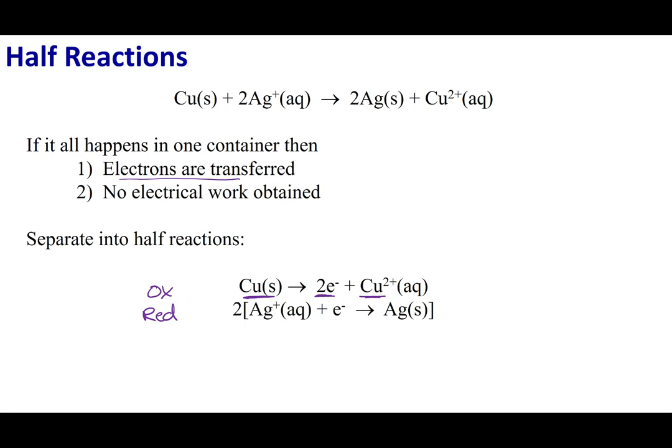My other half reaction is my reduction reaction. What I had was I had silver ions. Those silver ions grabbed an electron and became silver metal. I put a two here and that's to balance out my electrons because we can see that my oxidation reaction is producing two electrons.